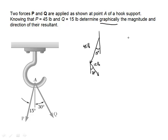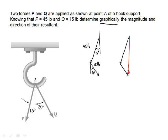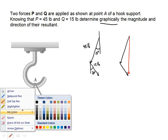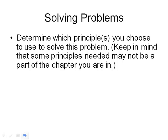The resultant of these two vectors is the red vector. Here is P and here is Q, and the red vector represents P plus Q — the resultant. The principle we choose to use to solve this problem is graphical arithmetic of vector quantities.